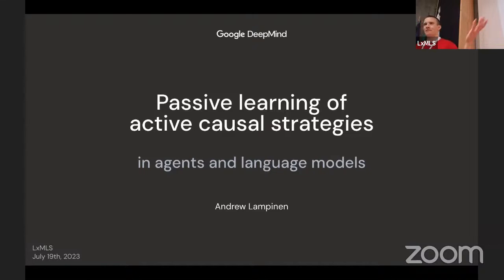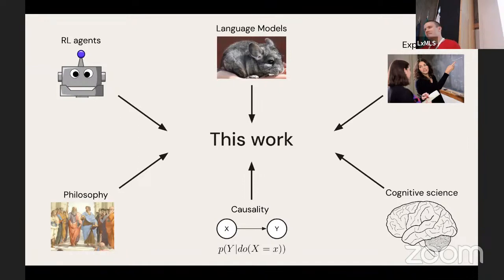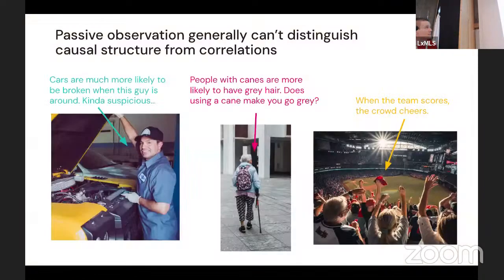Thanks very much for that kind introduction and for having me here. Today I'm going to tell you about some work we've done recently on passive learning of active causal strategies in agents and language models. I'm very excited about this work because it's one of the few projects that brings together a lot of the threads of research I've been doing over the past few years on reinforcement learning agents, language models, what you can learn from explanations, and topics in causality and philosophy and cognitive science. It might be a bit of a whirlwind tour.